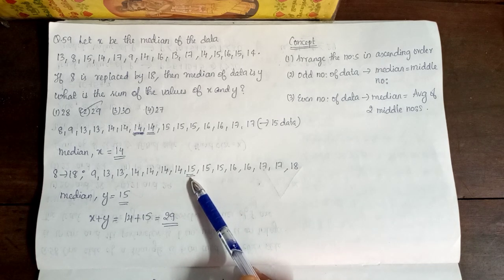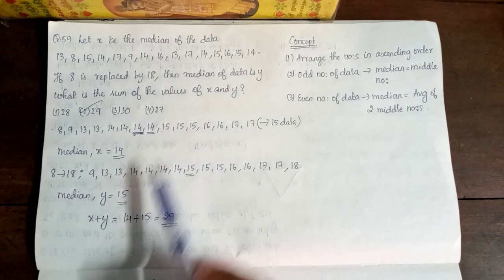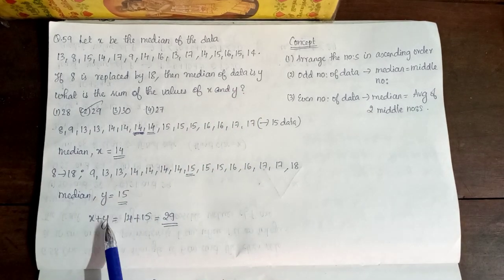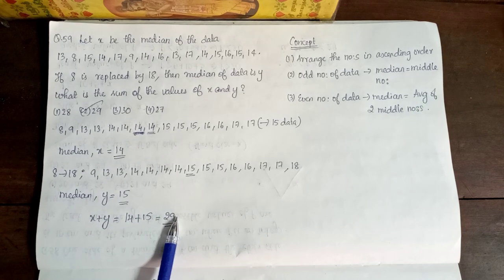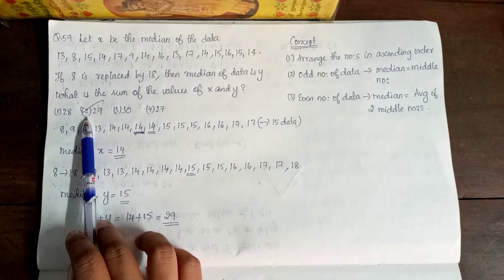Because, here is the median number. So, median of the median as y. That is 15. So, x plus y is 14 plus 15. This is equal to 29. So, our option is 2, correct.